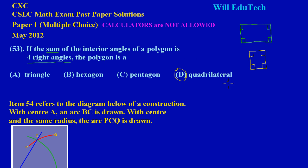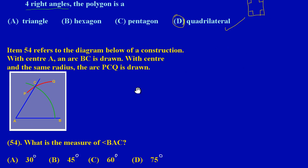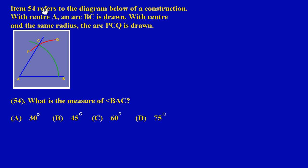So obviously D would be our correct answer, option D. Now item 54 refers to the diagram below of a construction. With center A, an arc BC is drawn.